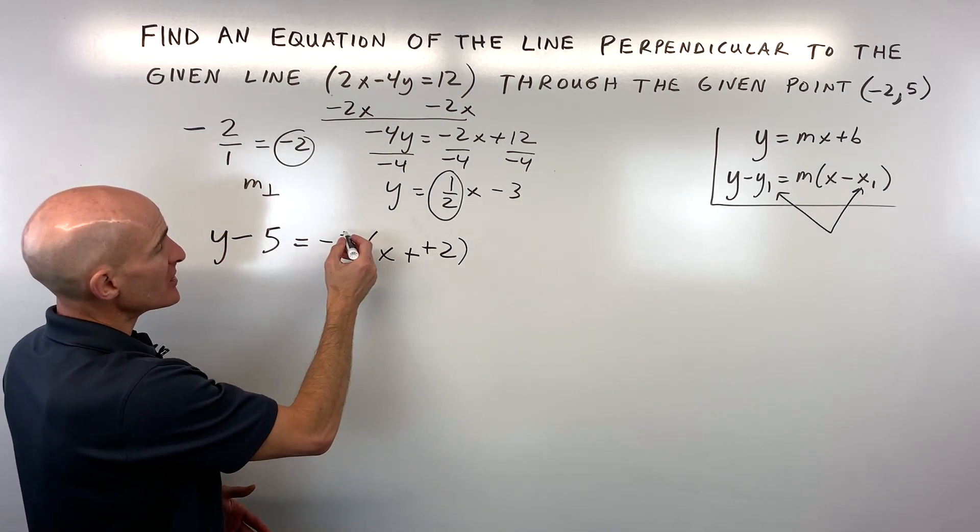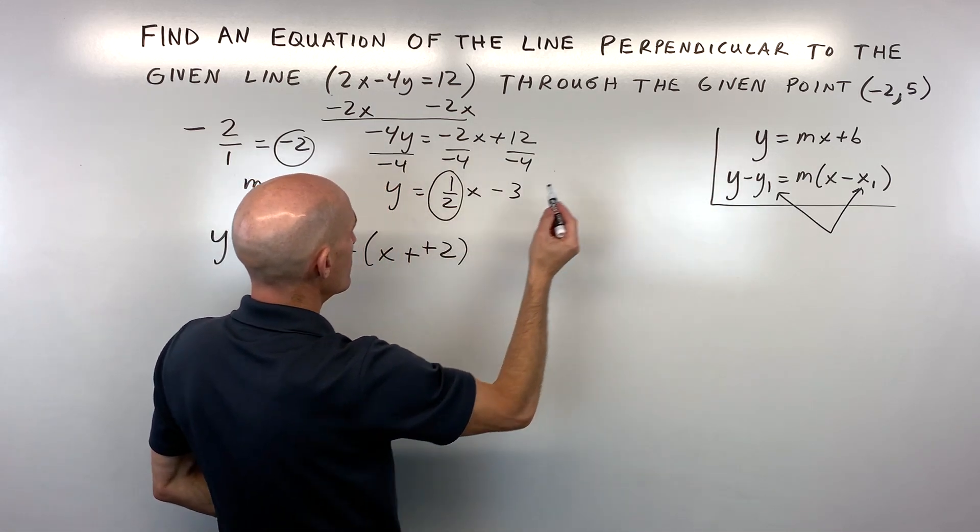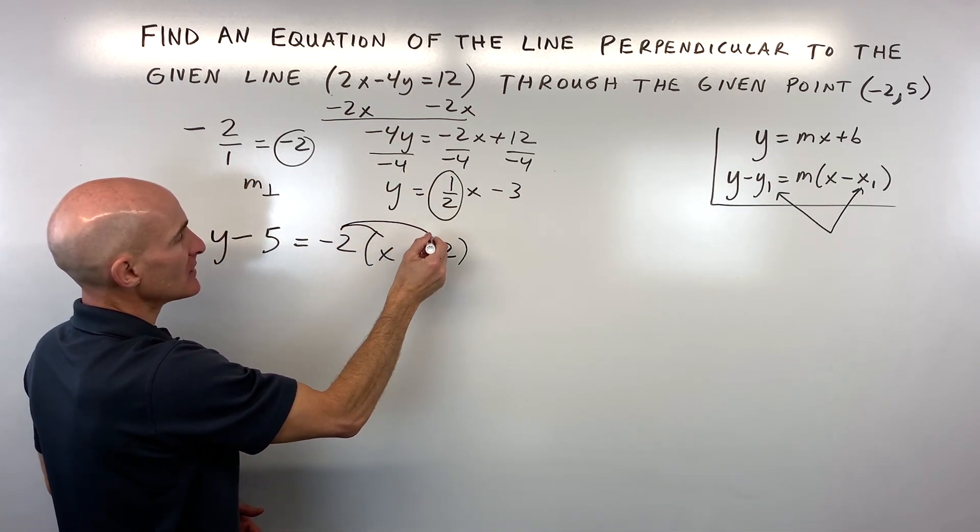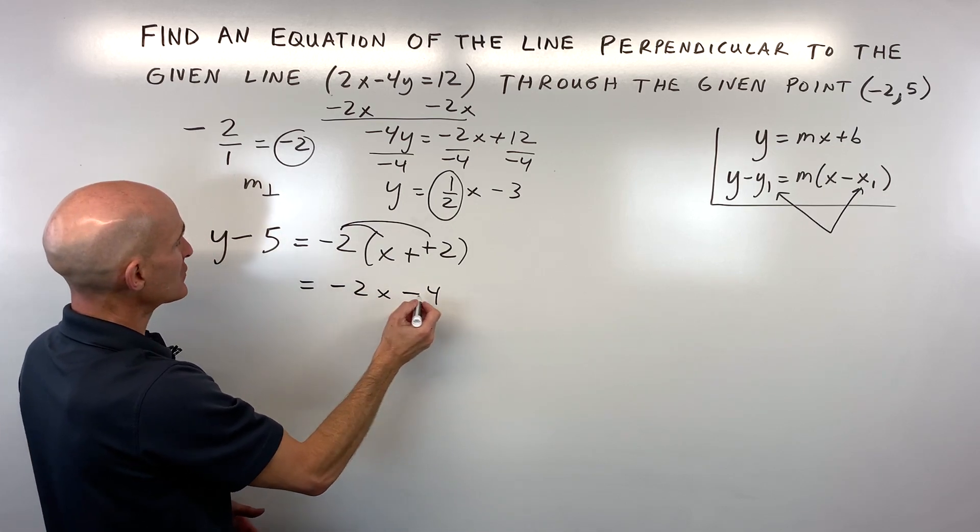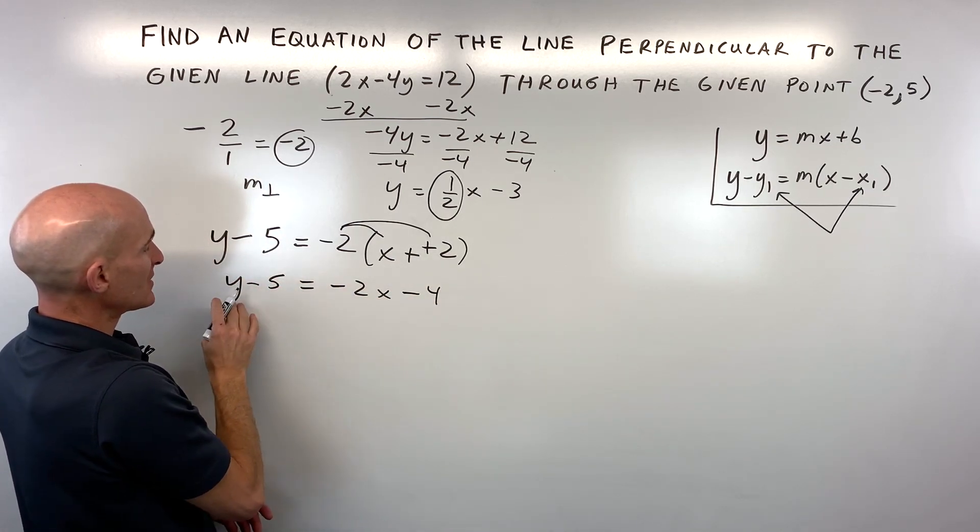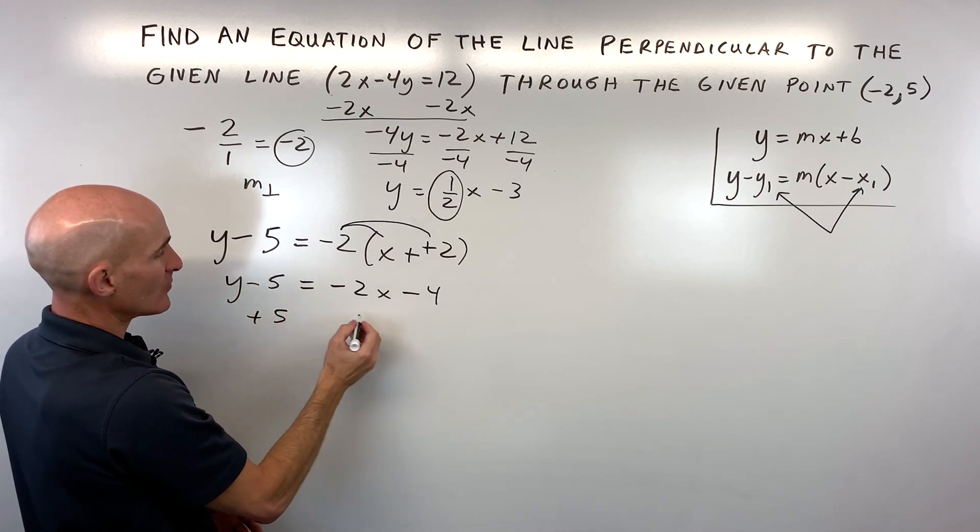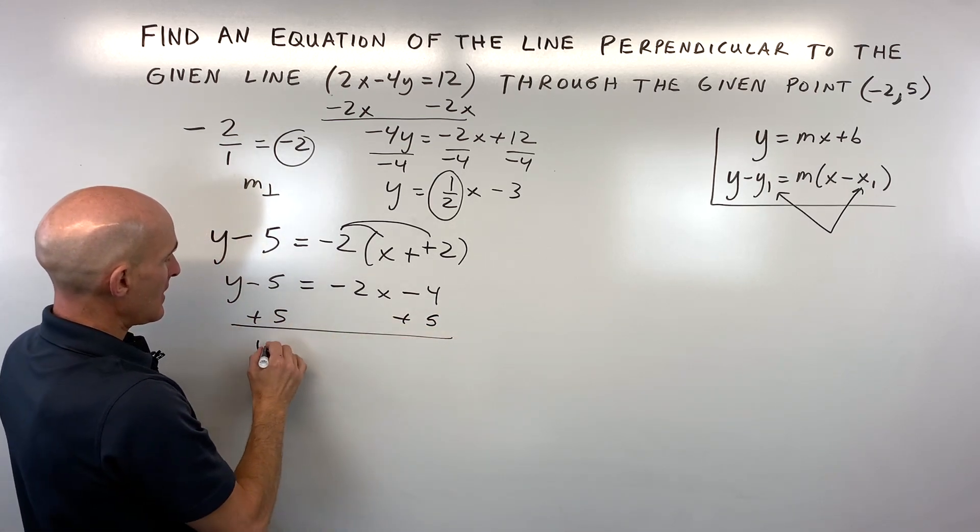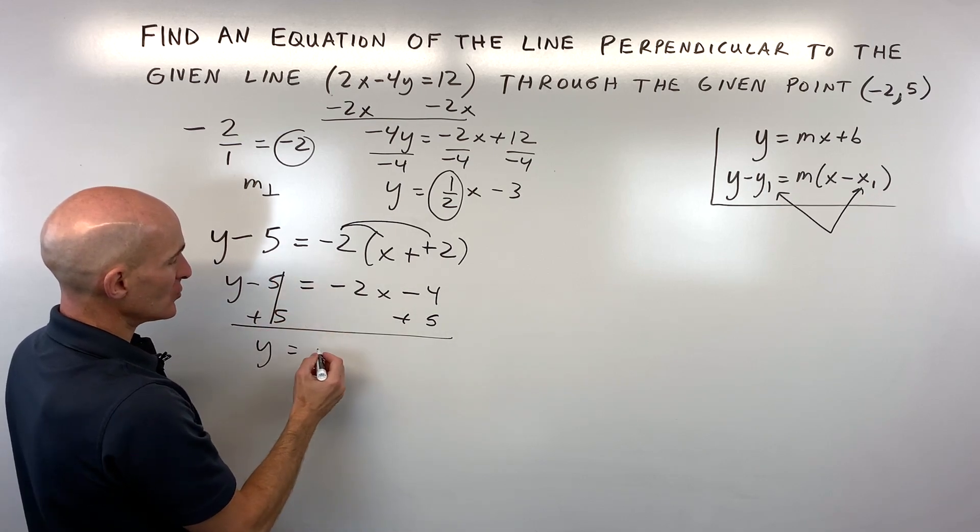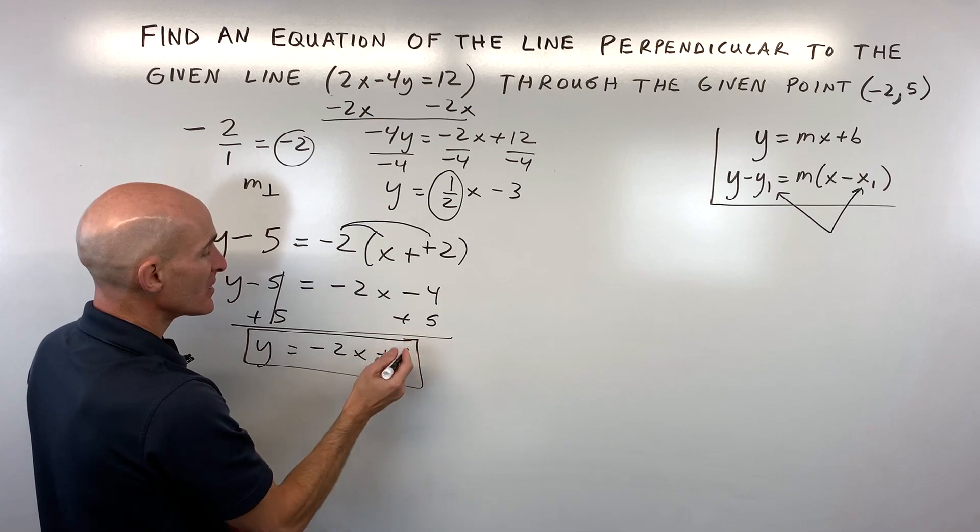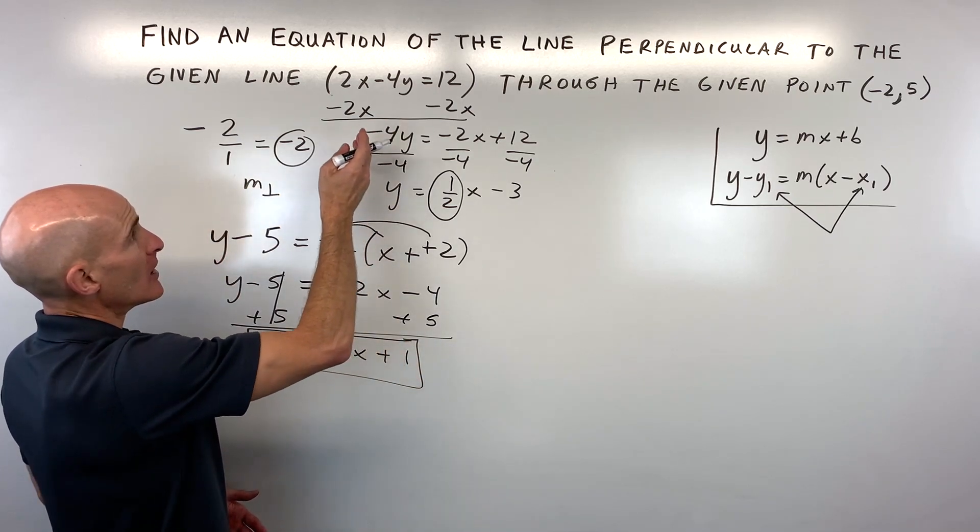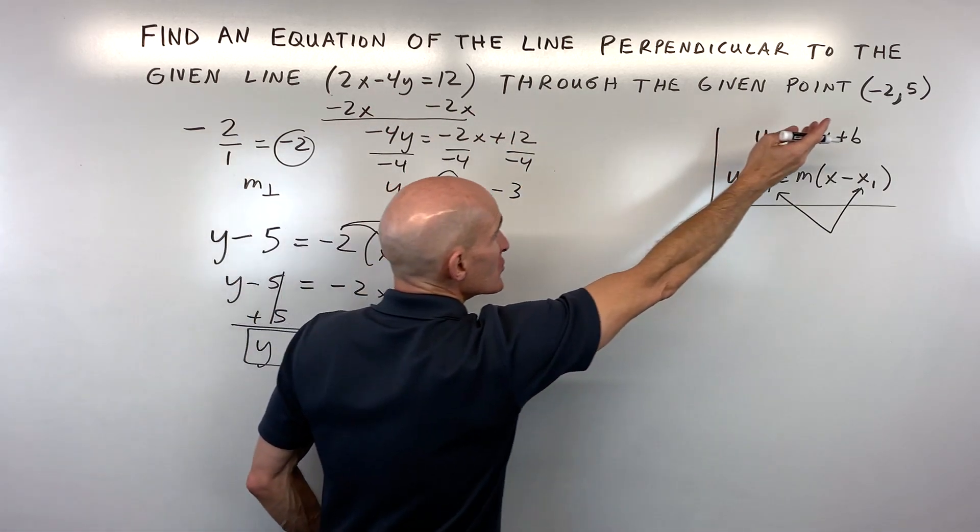Or, if you want to rearrange it into the slope-intercept form, you can distribute the negative 2 into the parentheses. That gives us negative 2x minus 4. Then to get y by itself, we'll add 5 to both sides of the equation, and now we have y equals negative 2x plus 1. So this is our perpendicular line, perpendicular to the original line, but it goes through this particular point.